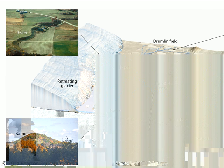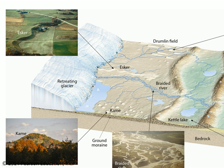So you can see here, over on the far right, there's an end moraine, which marks the furthest point that the glacier made it out to, so we can call this a terminal end moraine. If the glacier retreats a bit, it can leave behind a recessional end moraine as well. And then it can retreat some more and leave behind this big area of ground moraine, which has various landforms in it. You can see some kames here, little piles of till.